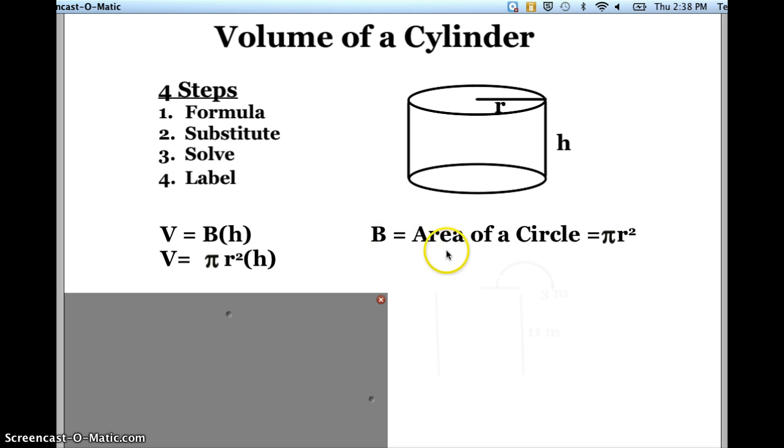So, the base is going to be the area of the circle, which is pi r squared times the height. So the formula for volume is going to be volume is equal to pi r squared times H. Now let's see how we can use this to solve a problem for volume of a cylinder.